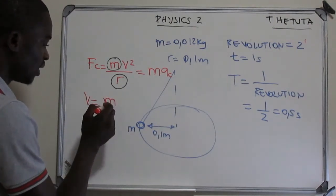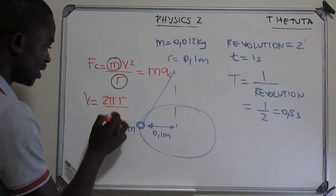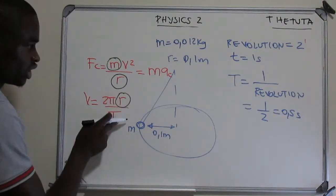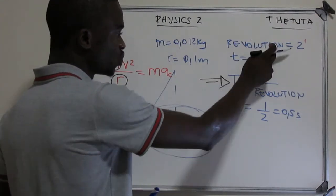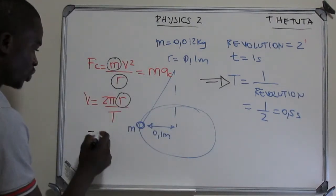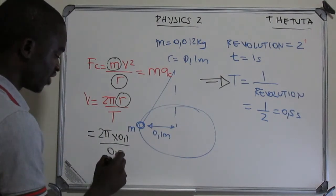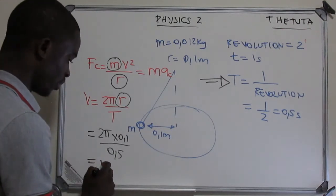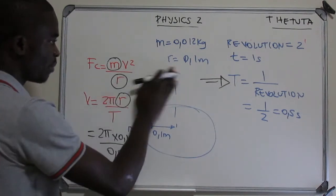In circular motion, the speed is given by v = 2πr/T. I know the radius but I don't know the period. The period I need to determine from the revolution — since the revolution is 2, the period equals 0.5 seconds. So the speed becomes 2π × 0.1 divided by 0.5, and therefore we get the speed to be 1.27 meters per second.